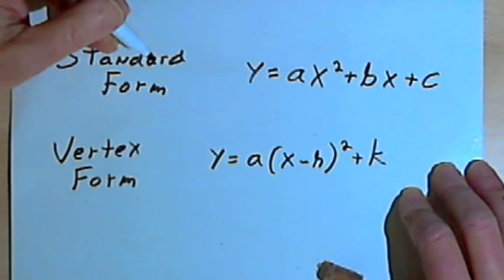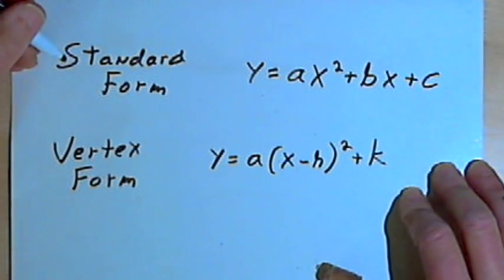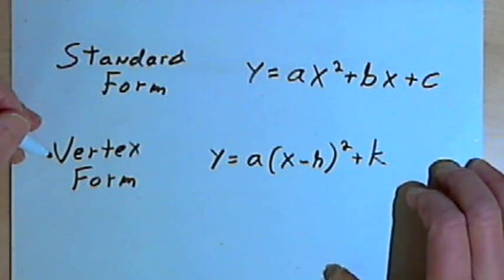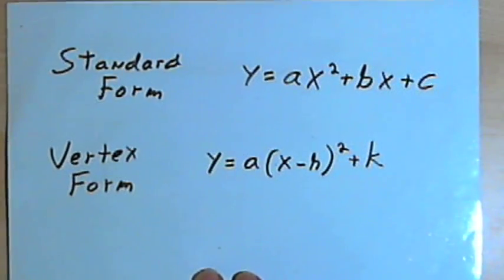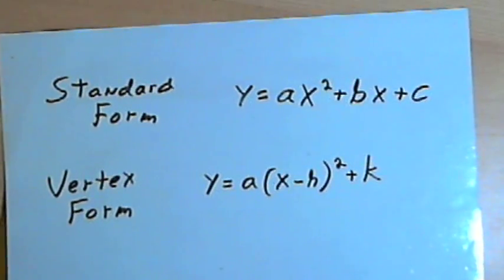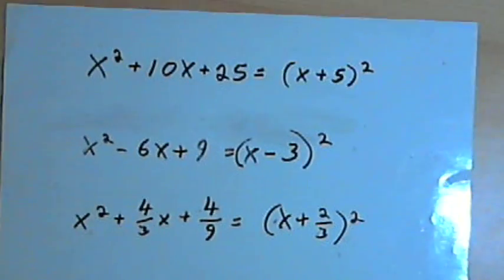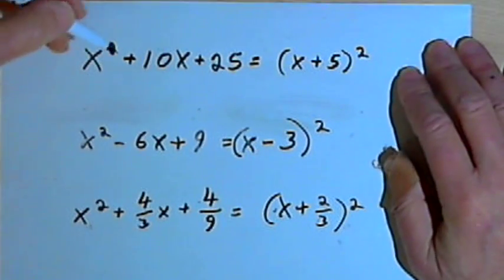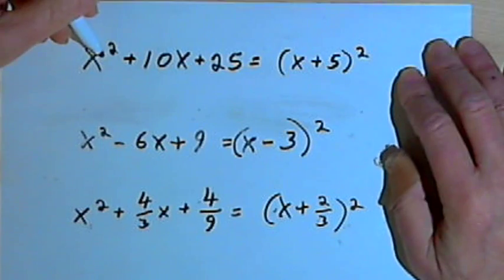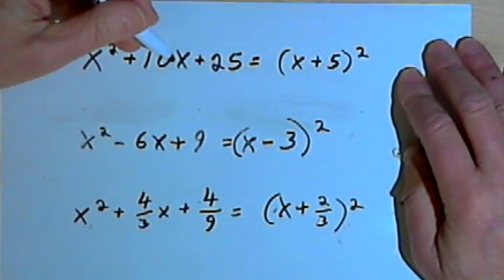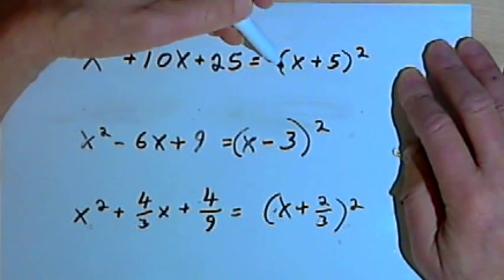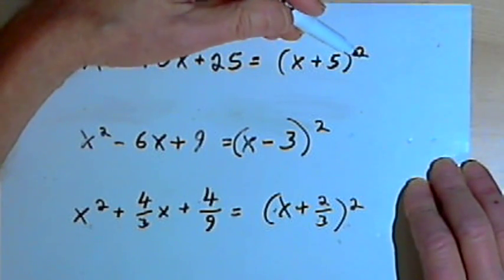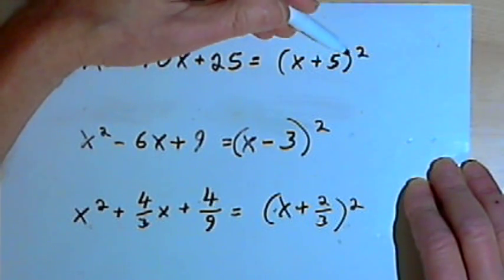What we want to know is how to convert from the standard form to the vertex form. Before we go right into the technique, I've got a trinomial: x squared plus 10x plus 25, and that equals the binomial squared, x plus 5 squared.